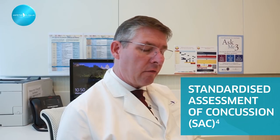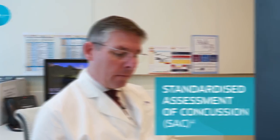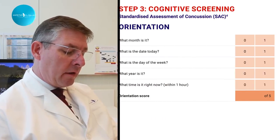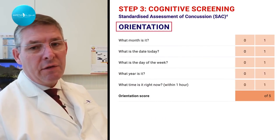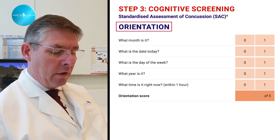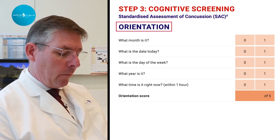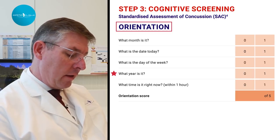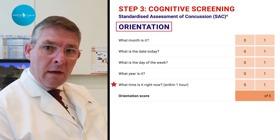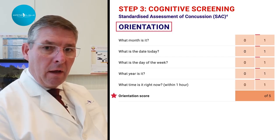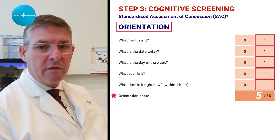The third part of the SCAT5 is the cognitive screening, or the Standardized Assessment of Concussion — the SAC test. The first part of the SAC test is orientation, which is not particularly meaningful for baseline testing since most non-concussed athletes are oriented. Questions asked include: what month is it, what is the date, what day of the week, what year is it, and what time is it within the nearest hour — scored out of five. Our athlete scored five out of five.